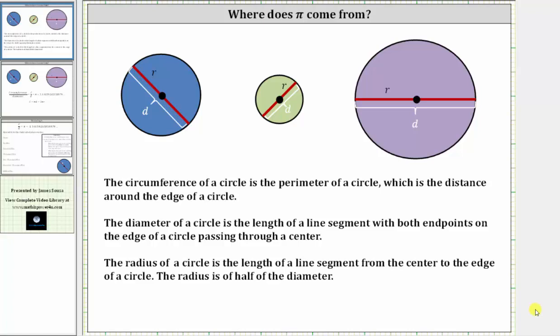Where does the number pi come from? Pi comes from the property of a circle. But before we discover this, let's go over some definitions.